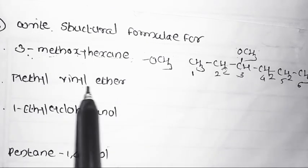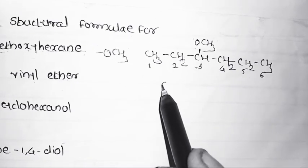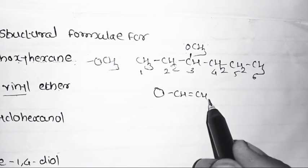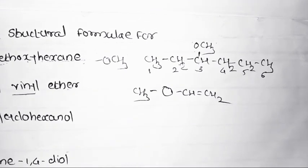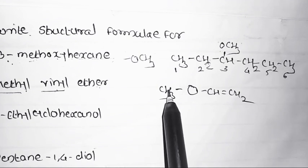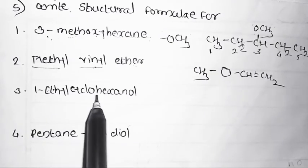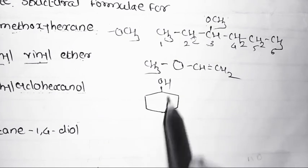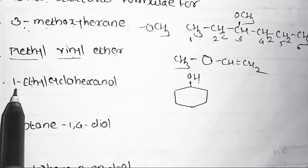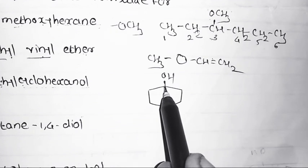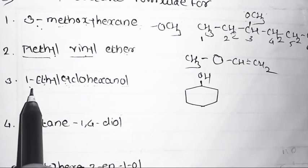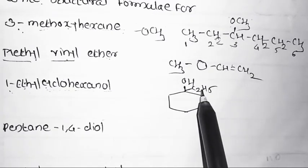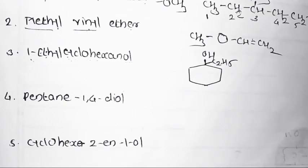Second example: methyl vinyl ether. Third example: 1-ethylcyclohexanol. This is a cyclic ring — cyclohexanol. In the cyclic ring, the OH group is at position 1 (always first position for the functional group), and the ethyl group C2H5 is also attached to the same carbon at position 1. So this is 1-ethylcyclohexanol.